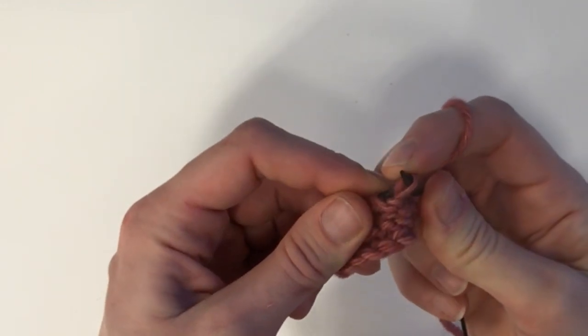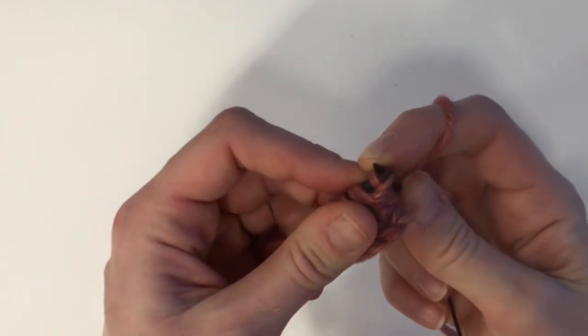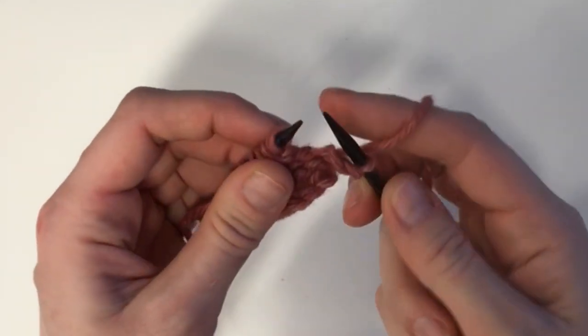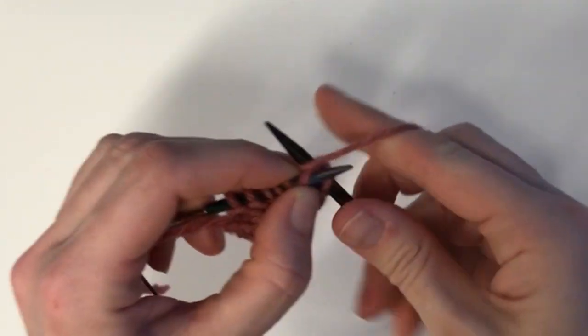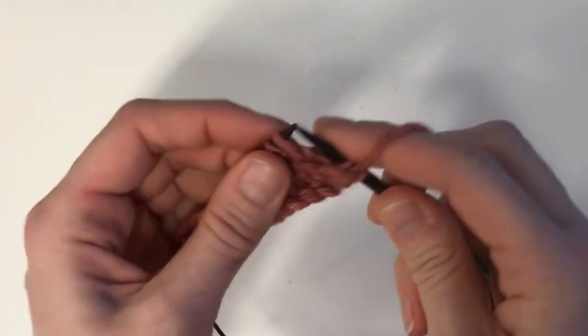Then this is the tricky part, you're going to go back to front through the back loop to slip the stitch back on the left hand needle and then you're going to knit them both through the back loop.